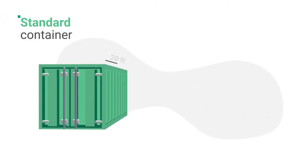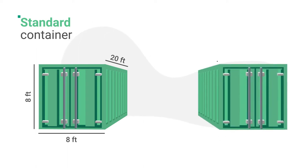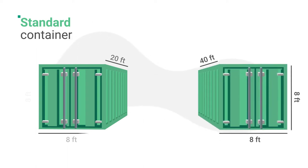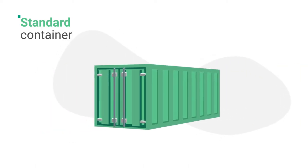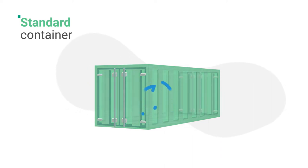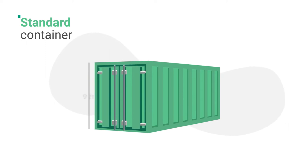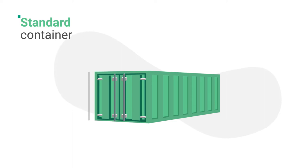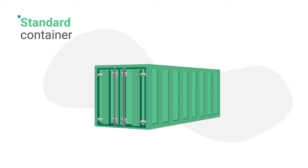1. Standard Container. Standard containers are the most common containers. They are 20 feet or 40 feet long, and have doors at one end. Made of steel or aluminum, they're airtight and water-resistant. You can also get high cubes, which offer more vertical space, or half-height containers. Most of the other types of containers are 20 or 40 feet, but have special modifications.